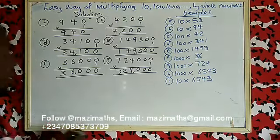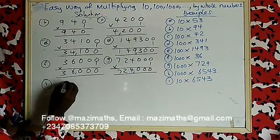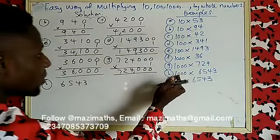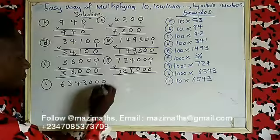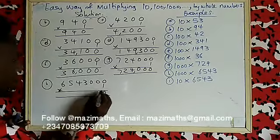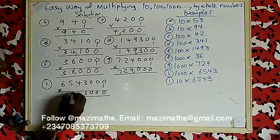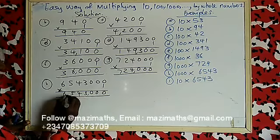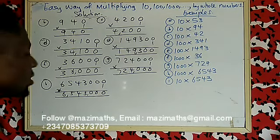Example H: 6543 multiplied by 1000. How many zeros in 1000? Three — put one, two, three. Then: one times three is three, one times four is four, one times five is five, one times six is six, and there are three zeros. Your answer is six million, five hundred and forty-three thousand.